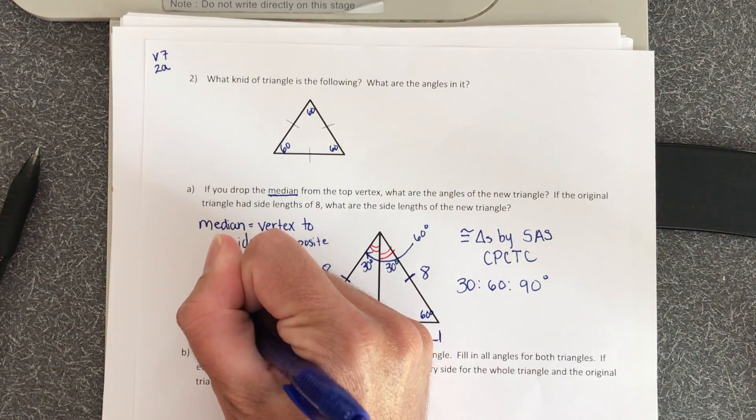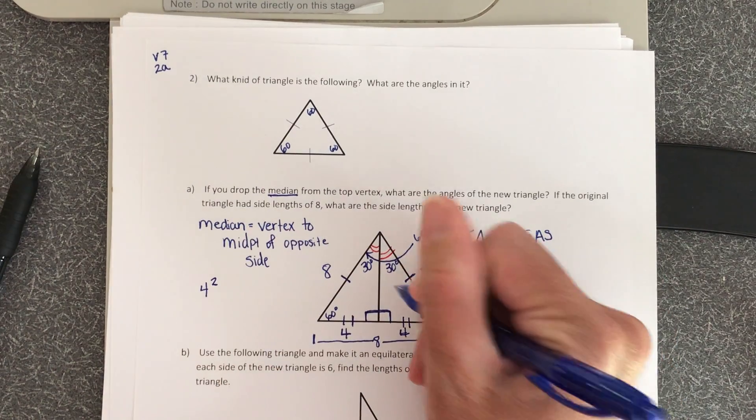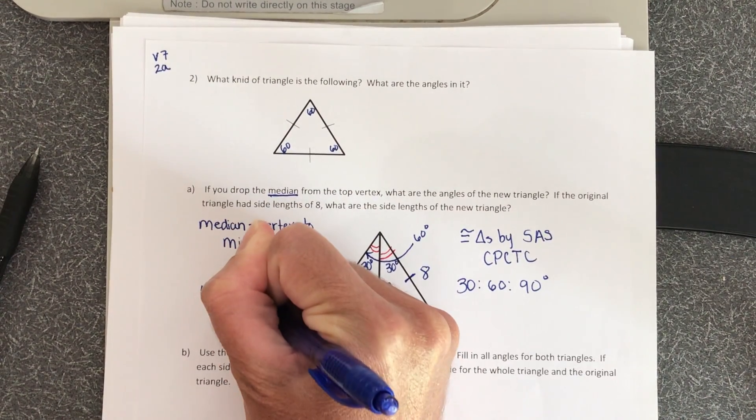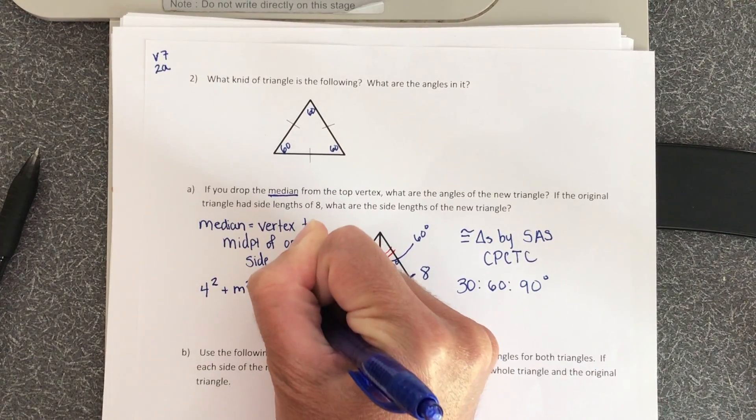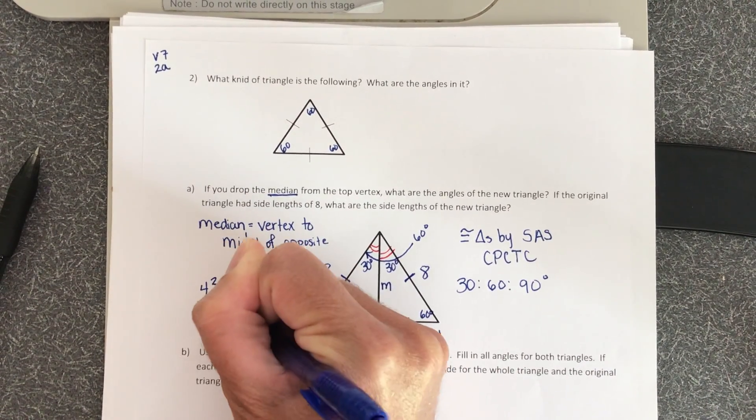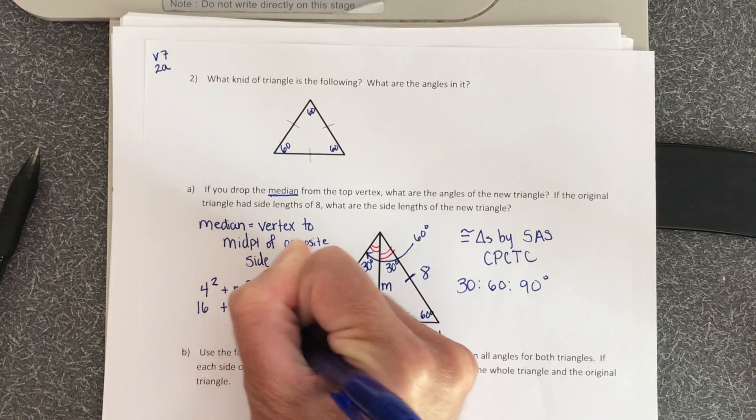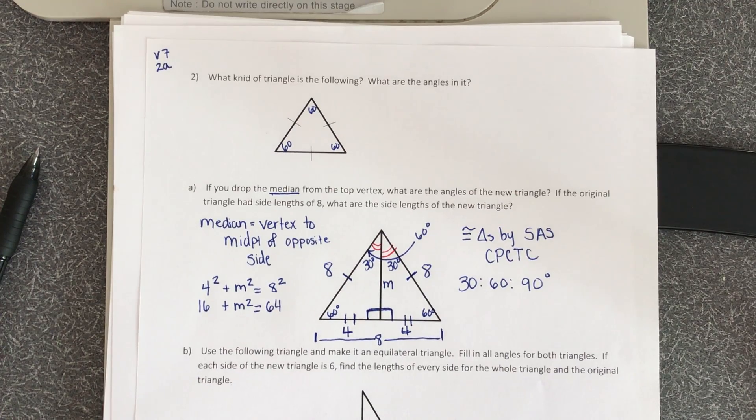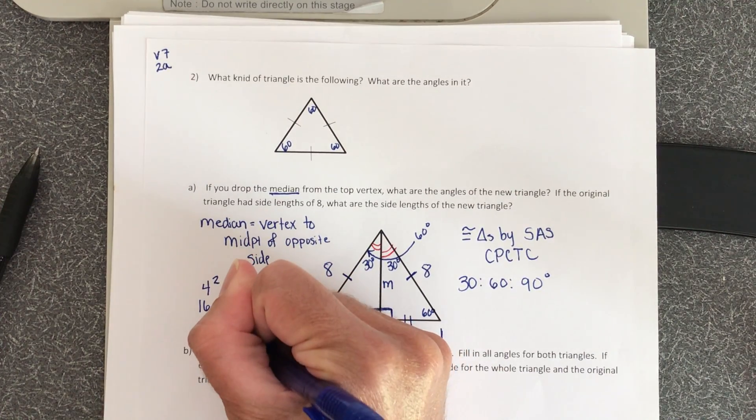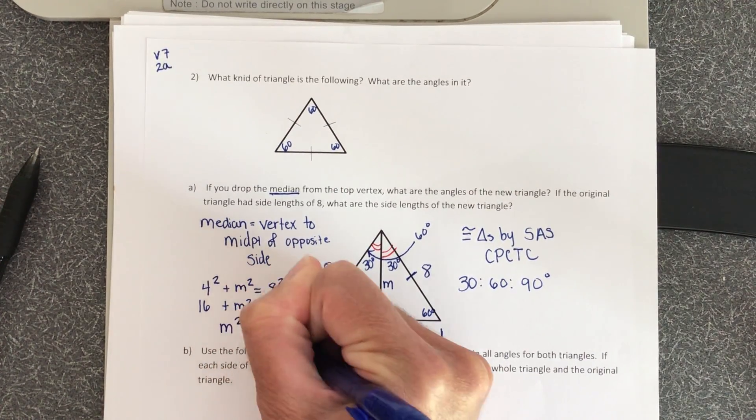So four squared, let's call it M for median, plus M squared equals eight squared. So 16 plus M squared equals 64. Then 64 minus 16 is 48, so M squared is 48.